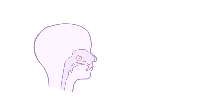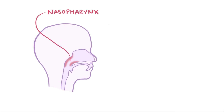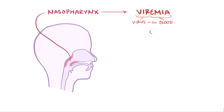Mumps enters the body and first infects the epithelial cells of the nasopharynx, where it starts replicating and causing local damage to the tissue. From there it can cause viremia, or a virus in the blood, and reach various organs and tissues.